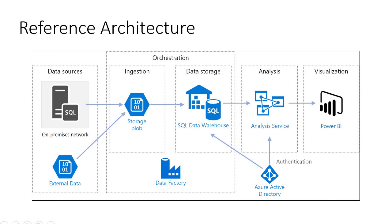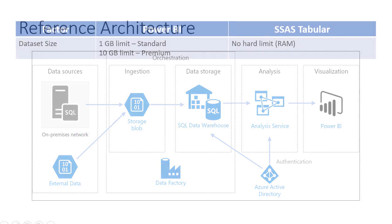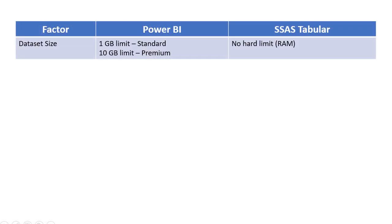So why would you use Power BI or why would you use Analysis Services Tabular? One thing to consider out of the gate is just the sheer size of your data. In the standard versions of Power BI in the cloud, you have a limit of 1 GB size for each dataset. If you're using Premium, that increases up to 10 GB at the highest level premium tier. Whereas in Analysis Services Tabular, there is no hard limit on the size of your dataset — this is really bound by the RAM on your server or your Azure resources if you're using a VM in the cloud.